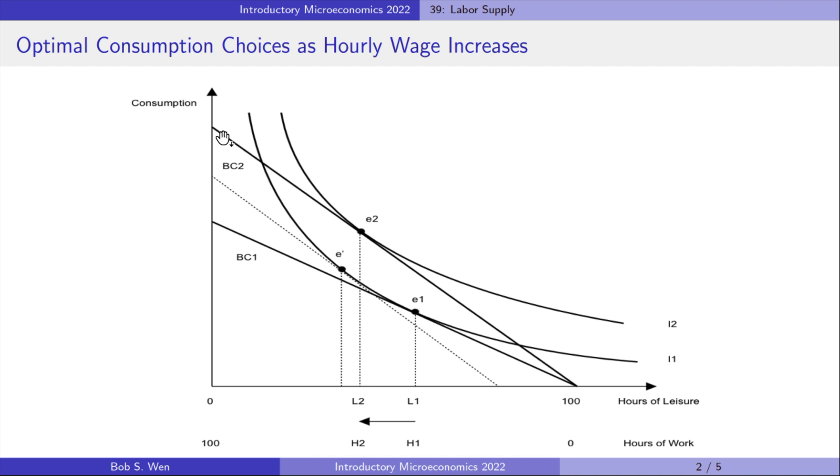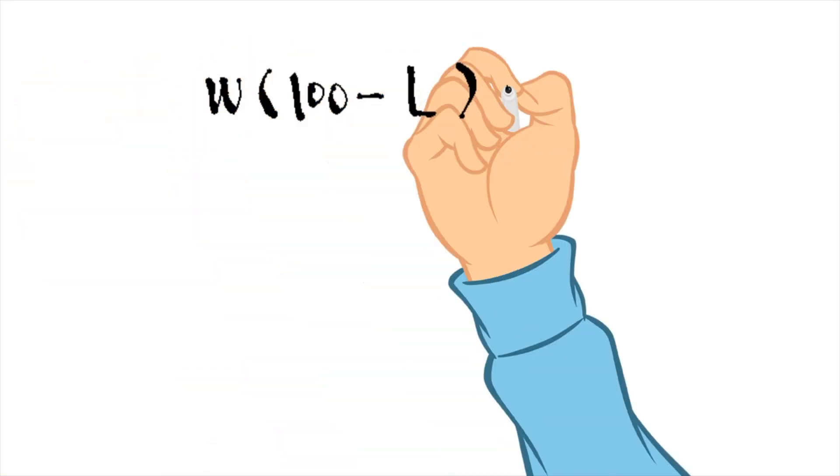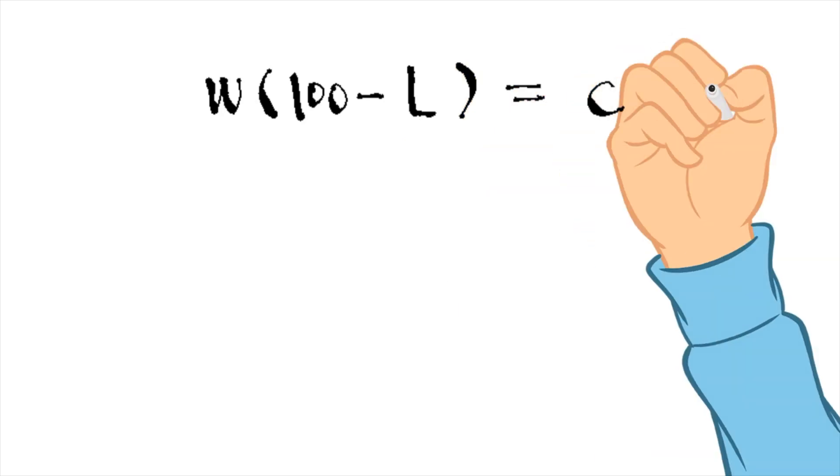To see why the budget line rotates this way, we can consider her budget constraint function. Her hours of work equals 100 minus hours of leisure. The hourly wage times her hours of work is her income, which equals her expenditure on consumption goods. We assume the price of consumption goods is 1.